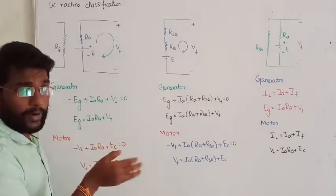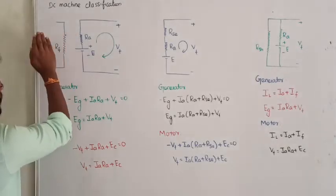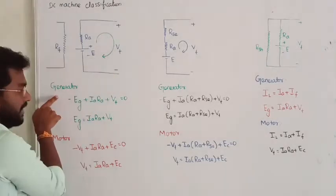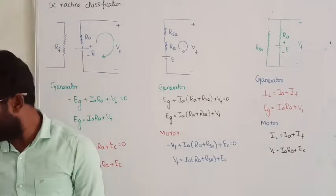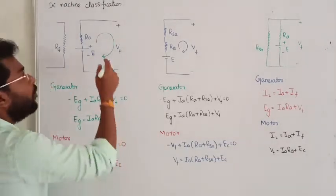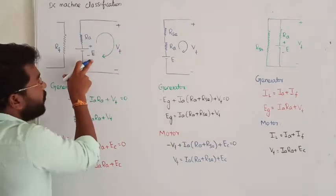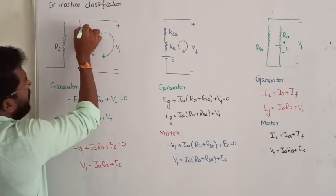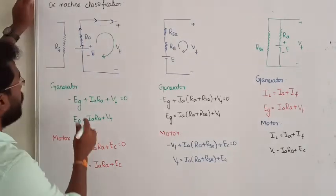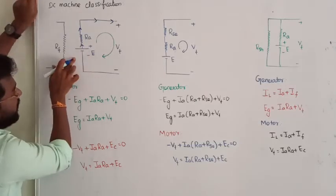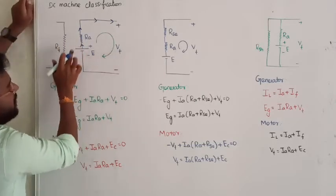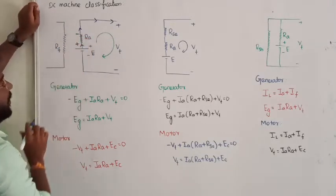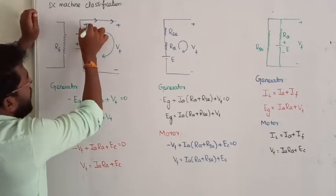First, I will take separate excitation. In separate excitation, the excitation is separated from the armature winding. In case of a generator, voltage will be generated, and this generator voltage will deliver current to the external load. Current is going from inside — that is from E to V — through the armature resistance. The resistor is a passive element, so current entering point is plus and leaving point is minus. Let me call the current IA.